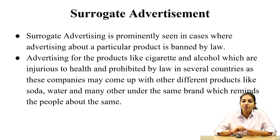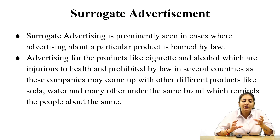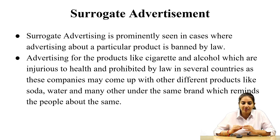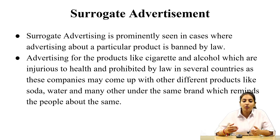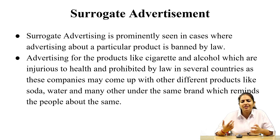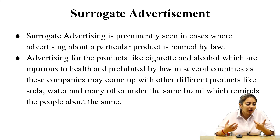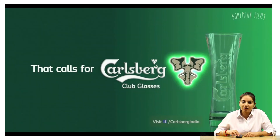Next is surrogate advertisement. Surrogate advertisement works like this: for example, alcohol and tobacco advertising is banned — you are not supposed to advertise these kinds of products. But what companies do is they use the same brand name but sell something else, like soda. Kingfisher is all about beer and liquor, but what they are trying to sell is soda, water, glasses, and music — all under the name of Kingfisher. So Kingfisher is indirectly reminding us about the liquor. This is all about surrogate advertisement.